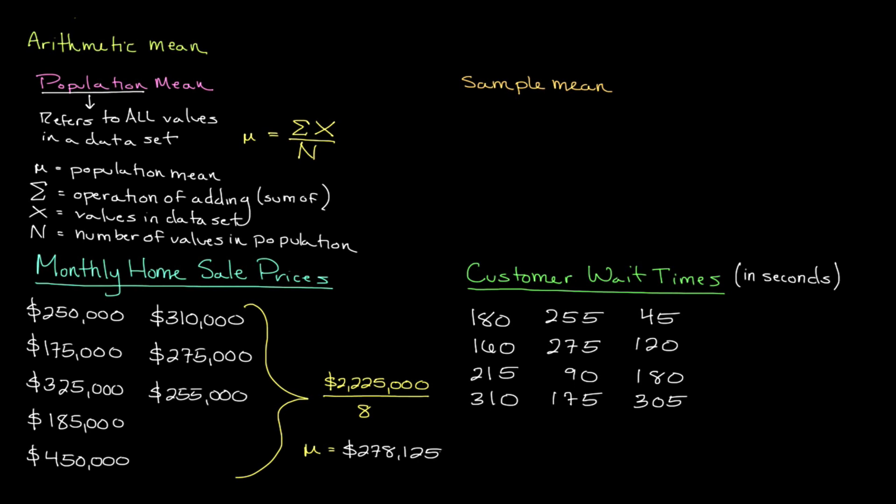Although similar to the population mean, the sample mean provides the approximate center of a sample of values, meaning we don't have all of the values in a dataset and instead have only a subset of the entire population. This is fairly common when conducting market research, since it's often not feasible to obtain data from an entire population. Instead, we try to make sure that our sample closely matches the characteristics of our population so that we can draw conclusions about the overall population.